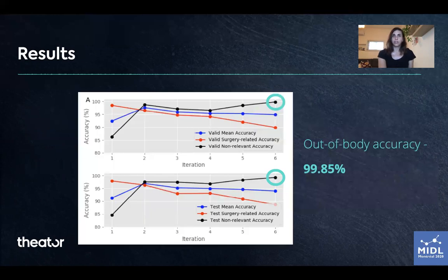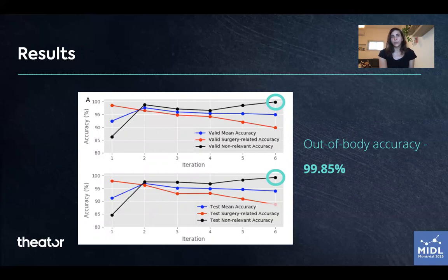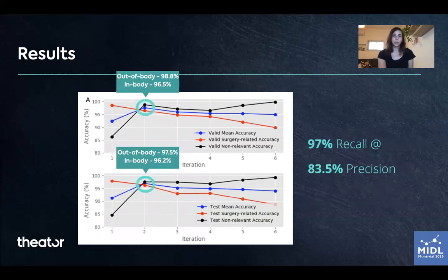After six iterations, the target out-of-body class reaches a near-perfect accuracy of 99.85%. Although our focus is on detecting out-of-body segments, we also want to minimize false positive predictions. Thus, we want to achieve high recall at high precision. For this purpose, one should choose the model achieved after two iterations. As you can see here, this model maximizes both classes' accuracy and produces 97% recall at 83.5% precision.